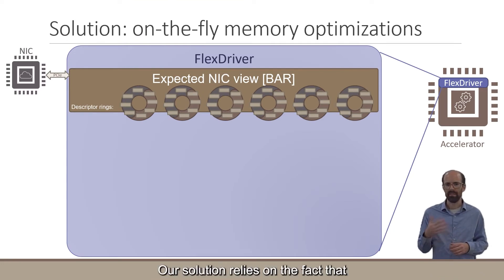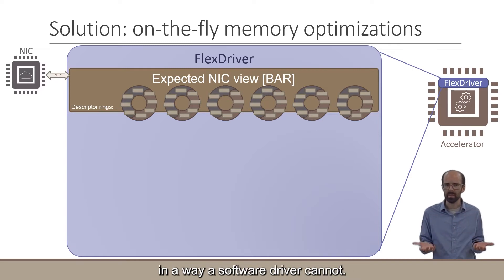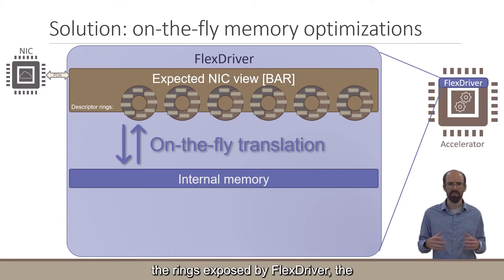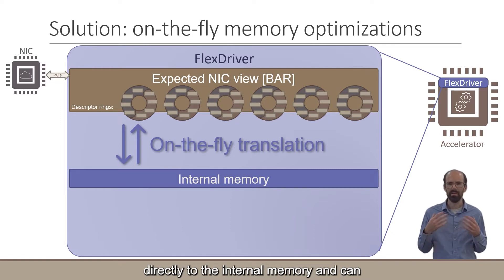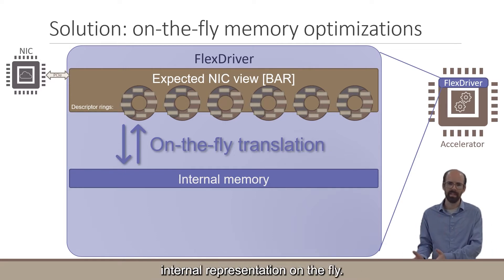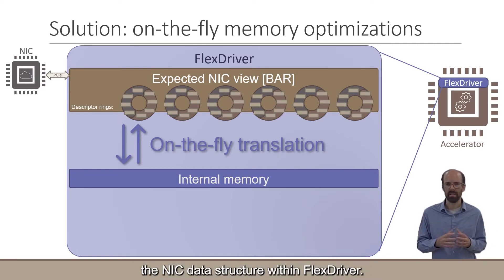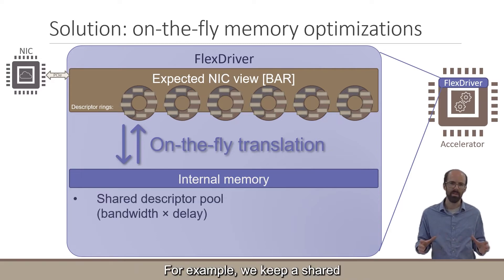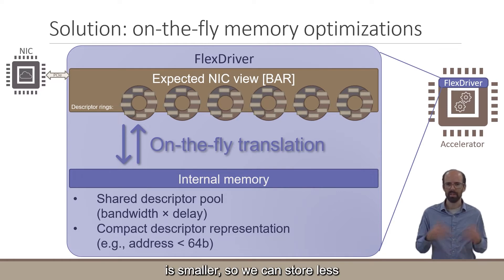Our solution relies on the fact that FlexDriver is a hardware module and can intervene in memory accesses in a way a software driver cannot. When the NIC attempts to read any of the rings exposed by FlexDriver, the read request is handled by FlexDriver logic, so it doesn't have to map directly to internal memory and can instead translate between the memory format expected by the NIC and the internal representation on the fly. We use a more complex internal representation of NIC data structures within FlexDriver — for example, we keep a shared descriptor pool sized to the overall bandwidth-delay product, improving scalability in the number of rings. We also store less than the 64 bytes used by the NIC per descriptor, since the address range per descriptor is smaller.